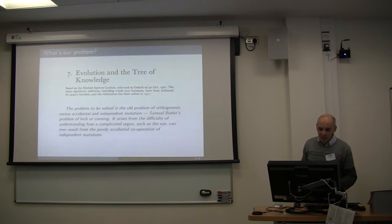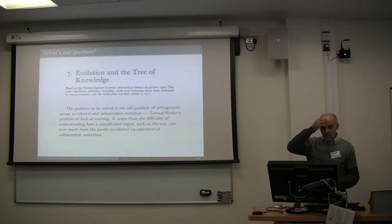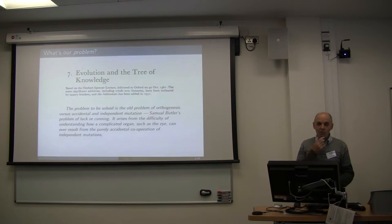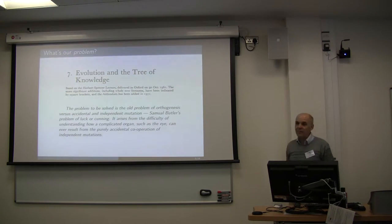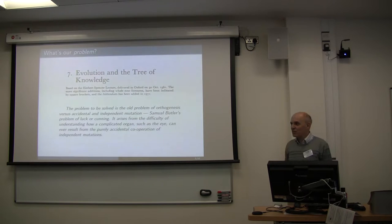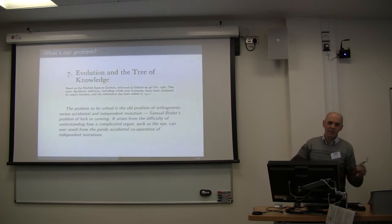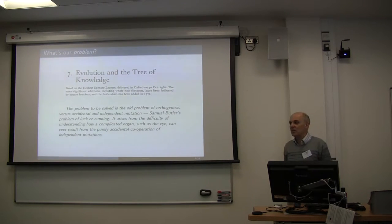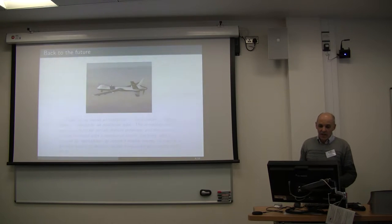There's something in here relevant to artificial life and open-ended evolution. Popper says the problem to be solved is the old problem of orthogenesis — directed evolution versus accidental independent mutations — Samuel Butler's problem of luck or cunning. It arises from the difficulty of understanding how an integrated organ such as the eye can result from purely accidental cooperation of independent mutations. Most evolutionary biologists think this is all done and dusted — you appeal to things like pre-adaptation or exaptation. Maybe what I'm going to describe is just that, or maybe a little bit more.